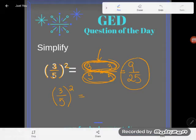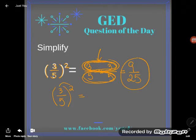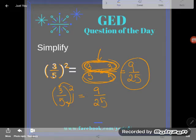When I raised three-fifths to the second power, what I ended up doing was basically squaring the top of the fraction and squaring the bottom. Super duper simple.